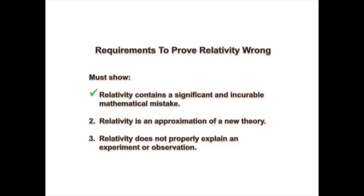So in this episode and the last, we've shown an incurable math mistake in Einstein's theory and that modern mechanics can make the same predictions as relativity with slightly better accuracy.